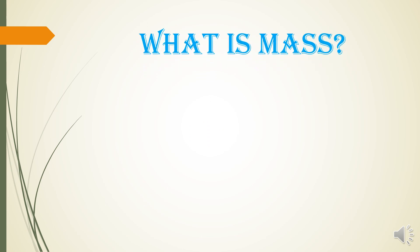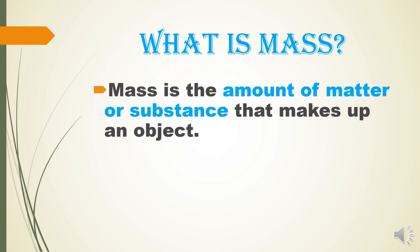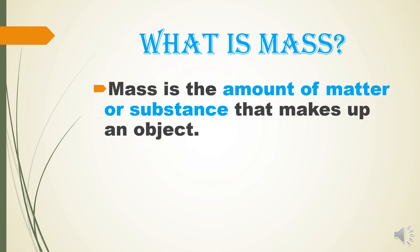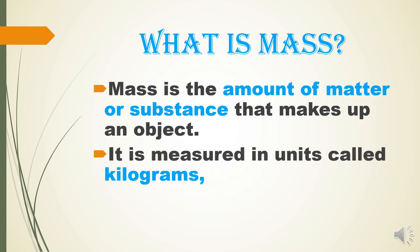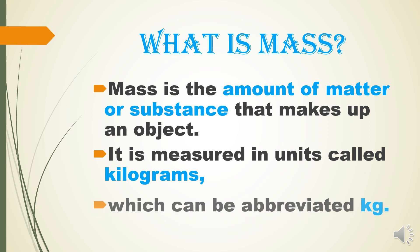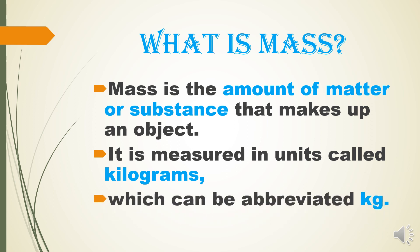What is Mass? Mass is the amount of matter or substance that makes up an object. It is measured in units called kilograms and grams, which can be abbreviated as kg and g.